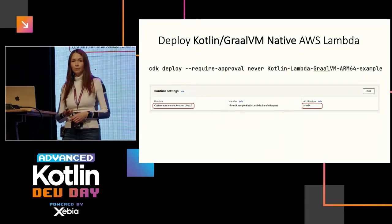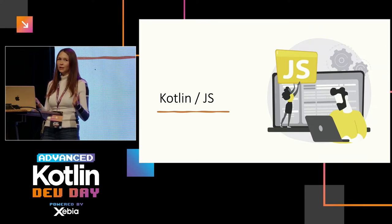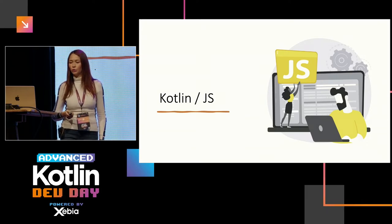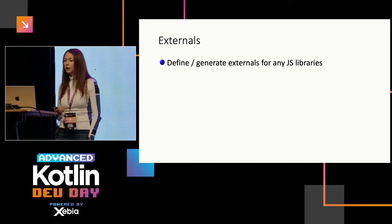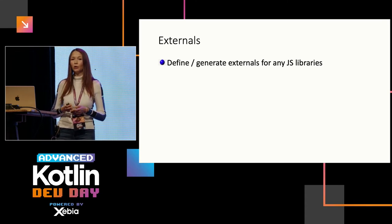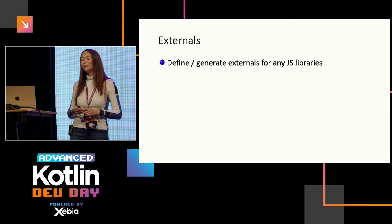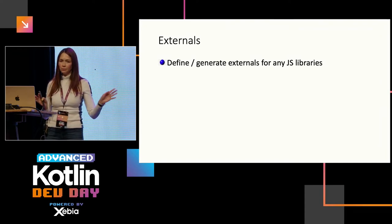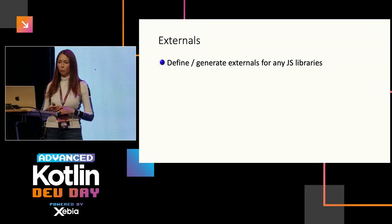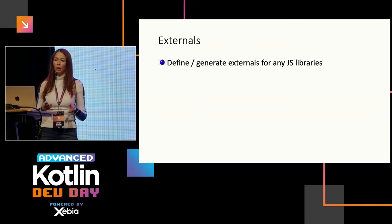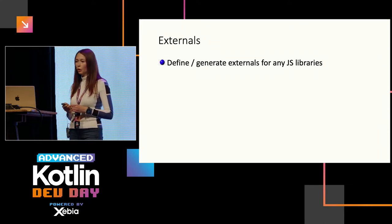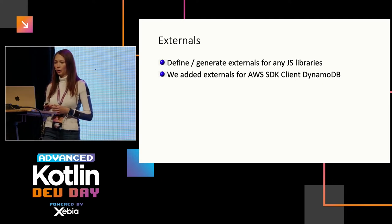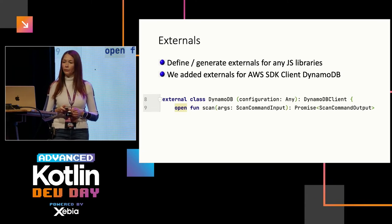Finally, the Kotlin/JS version. This one is a bit different because we can't use the JVM AWS SDK. We use the AWS SDK for JS. There is a Kotlin AWS SDK in the works that will support JS and native, but it's not available yet. For JS, we need to generate externals — for any JS library you want to call from Kotlin, you generate type definitions so it knows the method signatures. This is what we needed to add for the DynamoDB SDK: just the definition of the function to call.